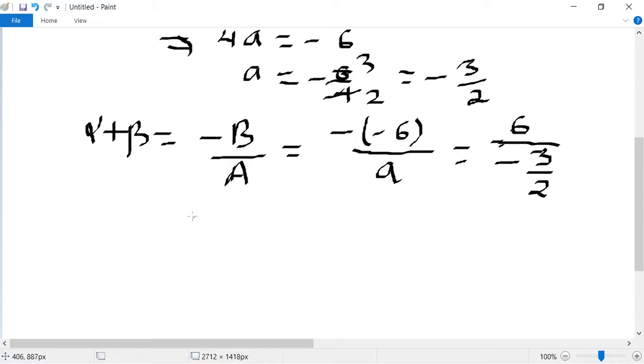Reciprocal कर देंगे, 6 multiply 2 by 3, 3 के टेबल से 6 को cancel कर देते हैं, so it becomes minus 4. यह हमारा answer हो गया, thank you.